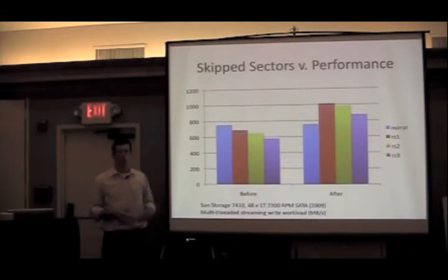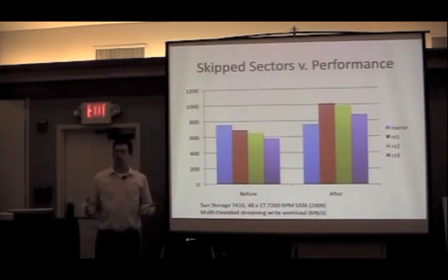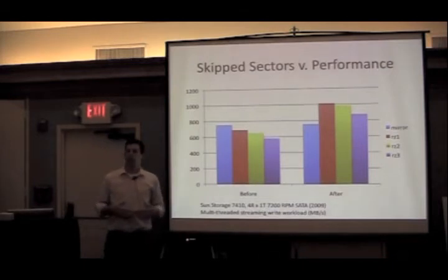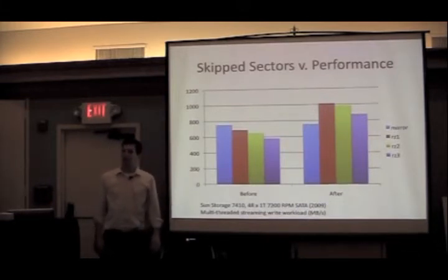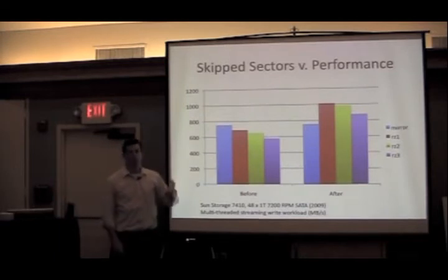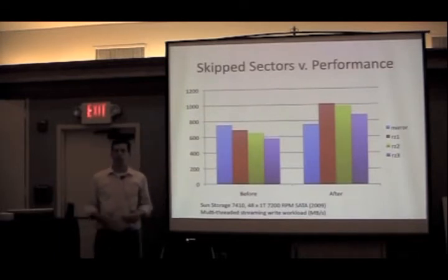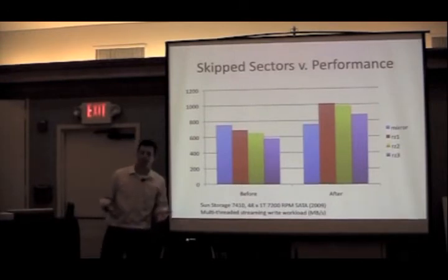Some people find it surprising that RAID can outperform mirroring. The reason is that we can effectively bring more spindles to bear on the problem. In a 4+1 RAID-Z configuration we're only losing one fifth of bandwidth to parity, whereas with mirroring we're losing half the bandwidth to parity. So it makes sense that with these RAID configurations we should be able to exceed what we get with mirroring.